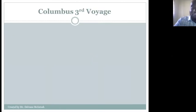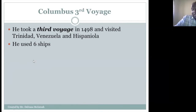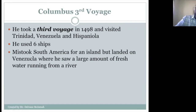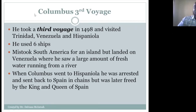Columbus took a third voyage in 1498 and visited Trinidad, Venezuela, and Hispaniola again, using six ships. He mistook South America for an island but landed in Venezuela, where he saw a large amount of fresh water running from a river. When Columbus went to Hispaniola, he was arrested and sent back to Spain in chains, but was later freed by the king and queen. He was accused of mismanagement of the colony.